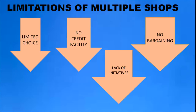Limitations of multiple shops or chain stores include limited choice since you cannot get different brands of the same product. Selling is done only on a cash basis with no credit facility, there is a lack of initiative, and there is no chance of bargaining since price is fixed by the head office.